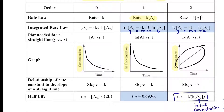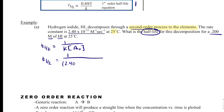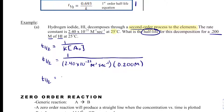For a second order process, the half-life formula is: t₁/₂ = 1 divided by k times A-naught, where A-naught is the initial concentration. Plugging in: k = 2.40 × 10⁻²¹ M⁻¹s⁻¹ and initial concentration = 0.200 M. When I calculate that, I get 2.08 × 10²¹ seconds, indicating this is a very slow reaction.